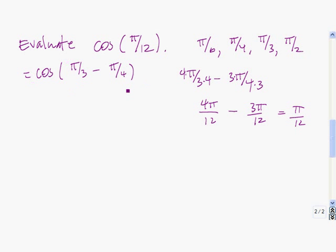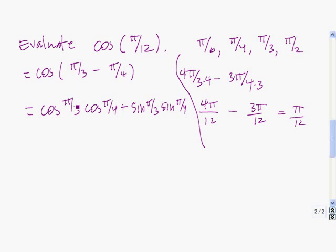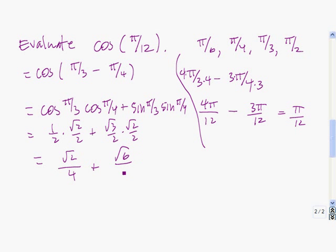We're using the difference identity for cosine. We take the cosine of the first times the cosine of the second. For the cosine identity, the sine term reverses — so instead of minus, we have plus sine of the first times sine of the second. Cosine of π/3 is 1/2. Cosine of π/4 is √2/2. Sine of π/3 is √3/2. Sine of π/4 is √2/2. So we have 1 times √2 = √2 divided by 4, plus √6 divided by 4. That means cosine of π/12 equals (√2 + √6) / 4.